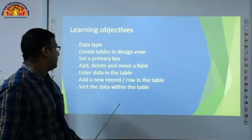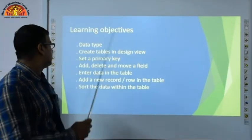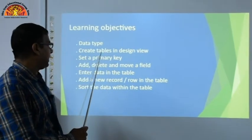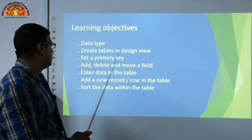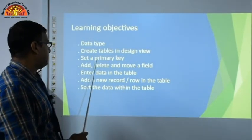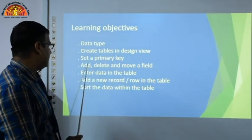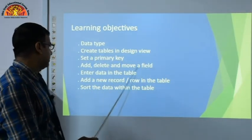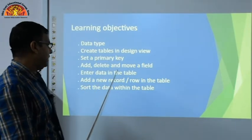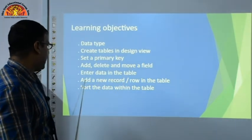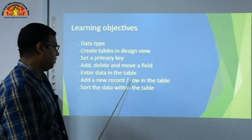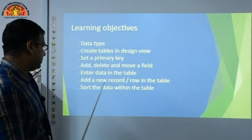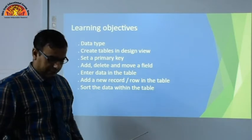In this chapter we learn about the following topics: data types, create table in design view, set a primary key, add, delete and move a field, enter data in the table, add a new record row in the table, and sort the data within the table.